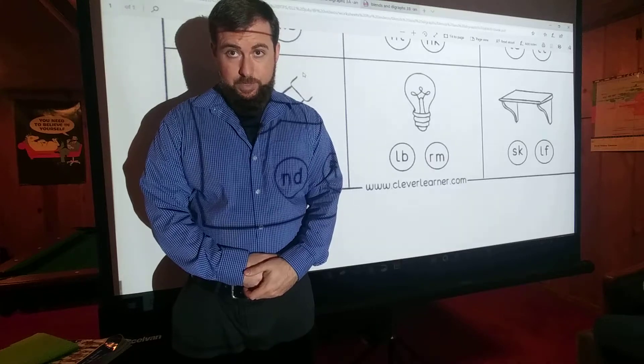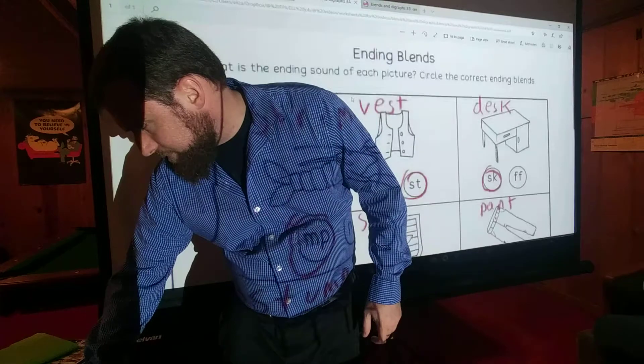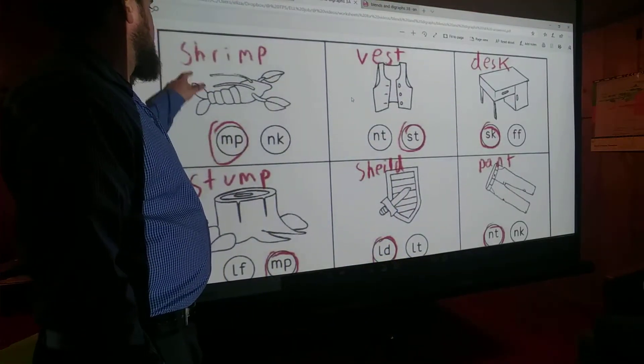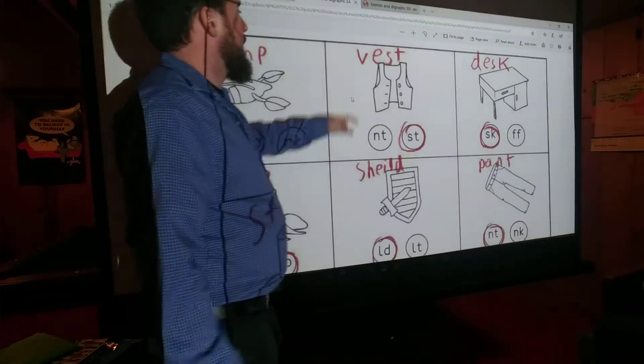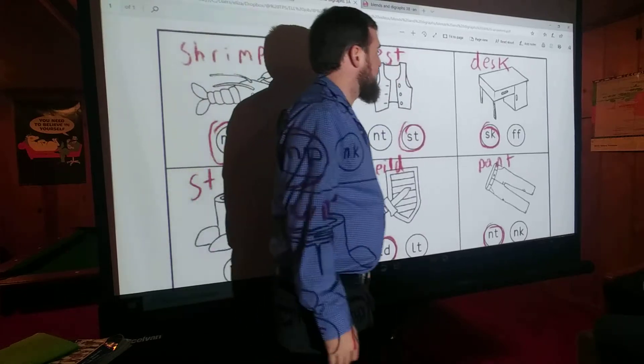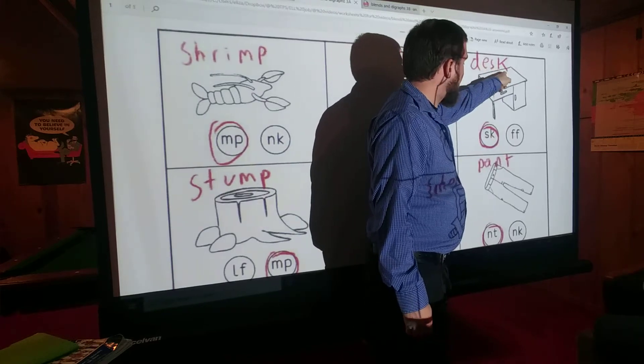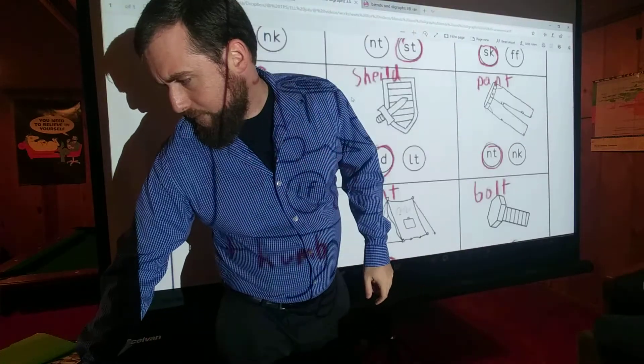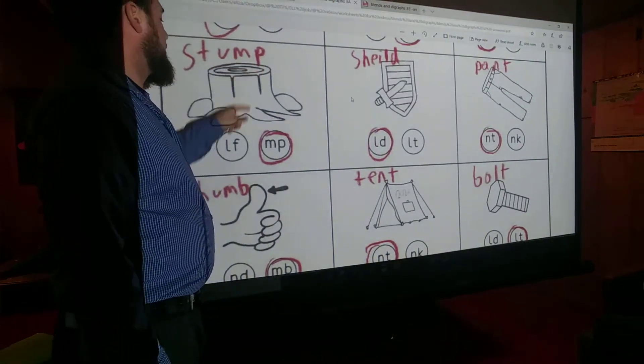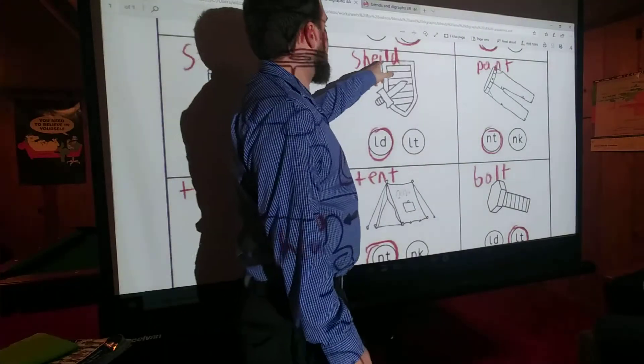Okay. Did you pause the video and circle something for every space? Good. Let's go over the answers. So shrimp - MP. Shrimp. Vest - ST. Vest. Desk - SK. Desk. Stump - MP. Stump.